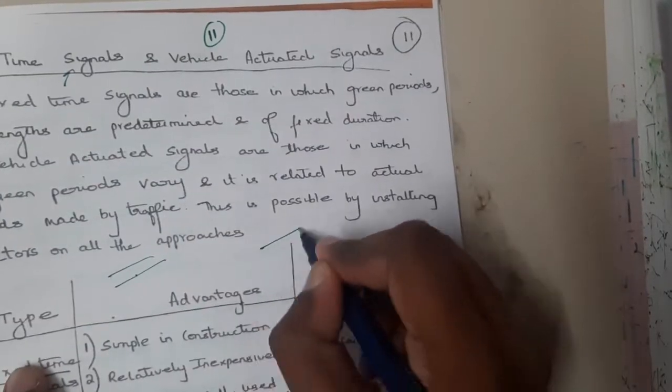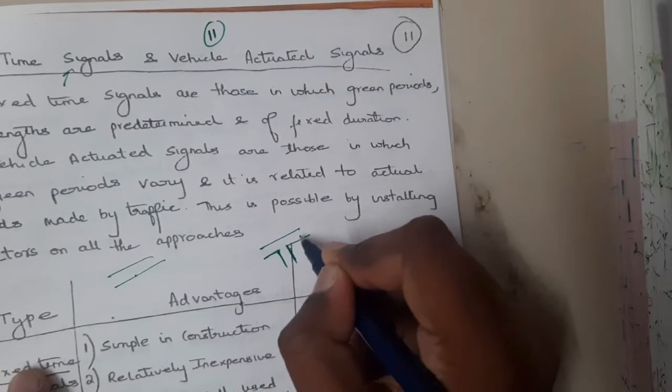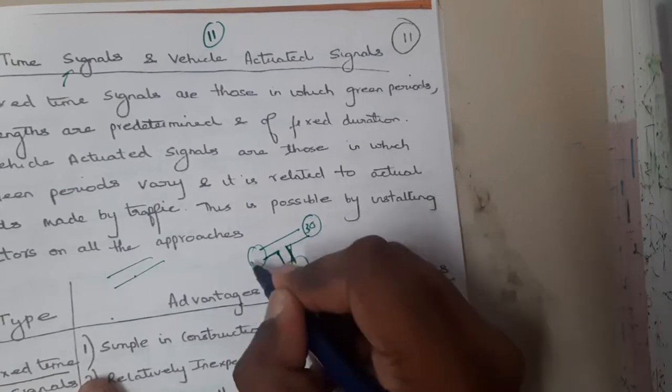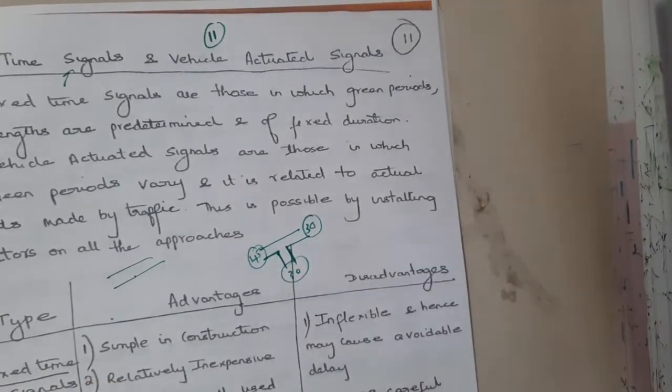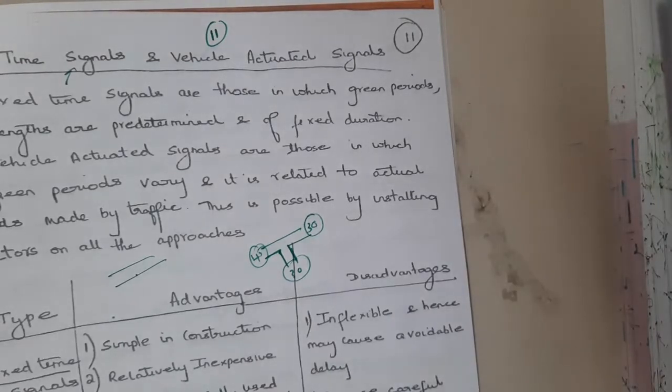If there are only three lanes - this lane, this lane, and this lane - this lane is given 30 seconds, this lane is given 30 seconds, and this lane is given 45 seconds. Whatever might be the traffic status, each of these lanes will be given that respective time.